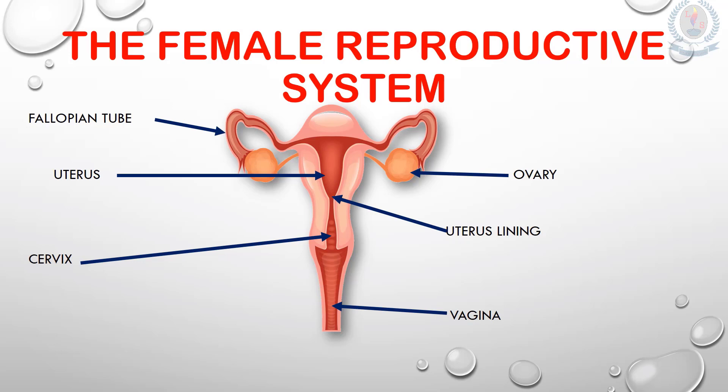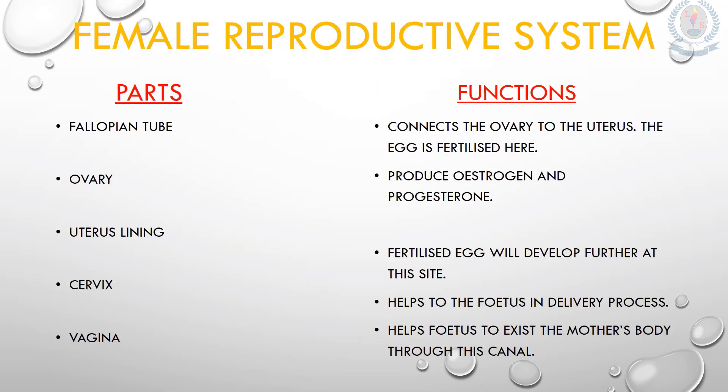Each and every part of the female reproductive system performs different functions. The fallopian tube is a muscular tube which connects the ovary to the uterus; its walls contract and push the egg towards the uterus, and the egg is fertilized in the fallopian tube. Oestrogen and progesterone are produced in the ovaries, and eggs are released from the ovary when they are matured. The fertilized egg will develop further at the inner layer of the uterus.